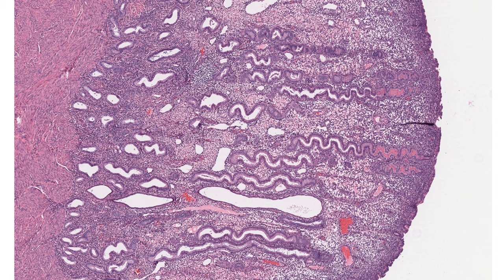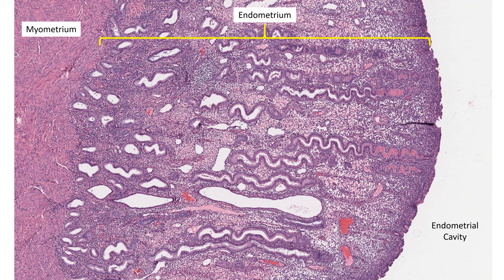Let's jump right in. Here we have a section from a hysterectomy specimen showing a nicely oriented portion of endometrium. On the right side of the screen is the endometrial cavity — the space at the center of the uterus lined by the endometrium. On the left is the myometrium, the thick smooth muscle wall around the uterus. The endometrium itself is split up into glands, and between the glands is the endometrial stroma, which supports and gives structure to the glands.